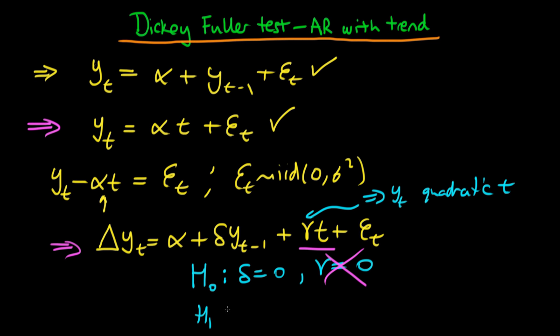What we do here is just like we did before: we calculate the ordinary t statistic on the estimated value of delta, which is delta hat, and then we compare that t statistic with the values from a Dickey-Fuller distribution. But it turns out that the Dickey-Fuller distribution in the case where we include a time trend is slightly different to the Dickey-Fuller distribution where we didn't include the time trend.